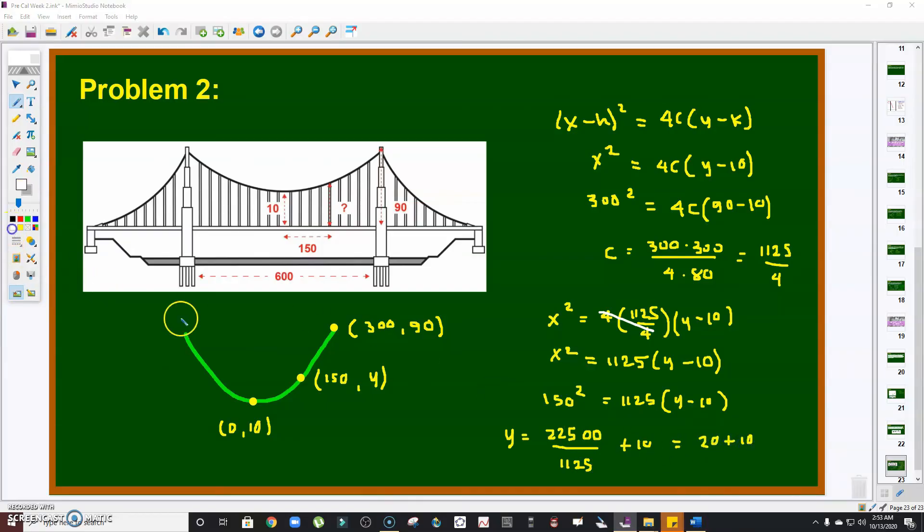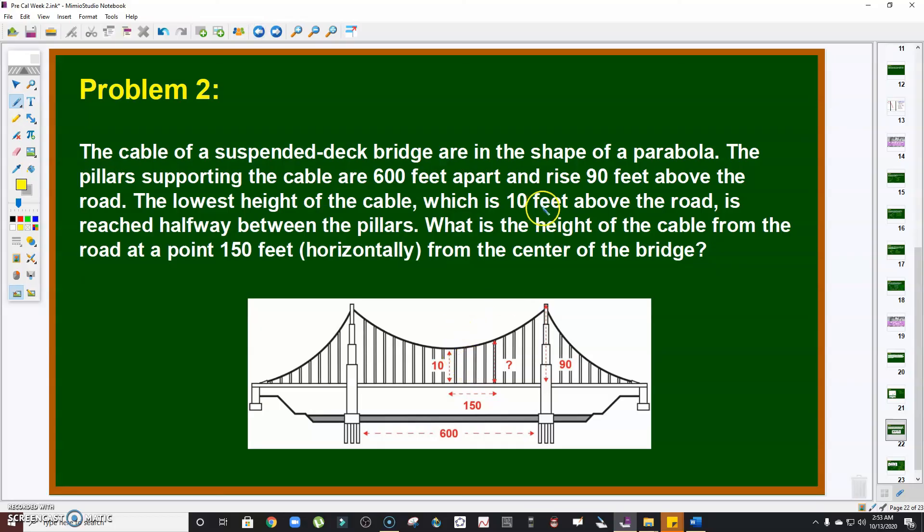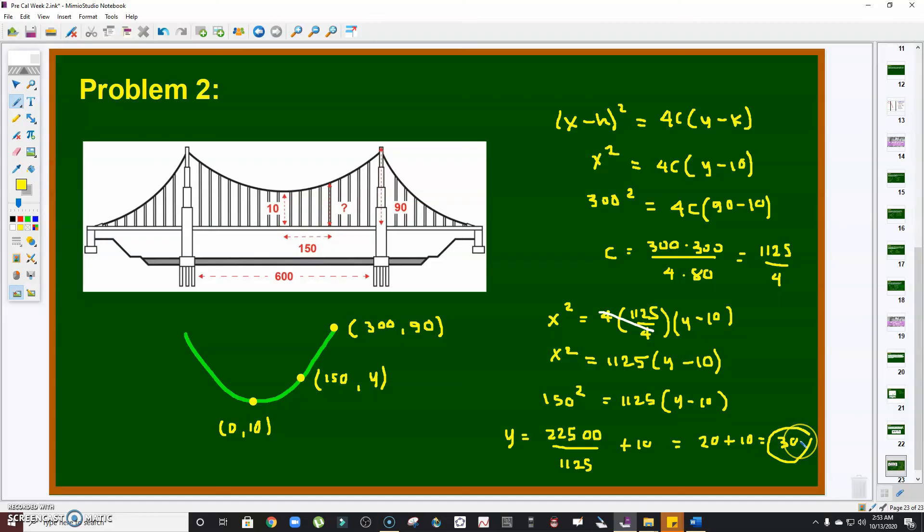Once again, this cancels out, so that will become 2. Therefore, the final answer here is y = 30. Since the question is in terms of feet, the answer is 30 feet. There you go.